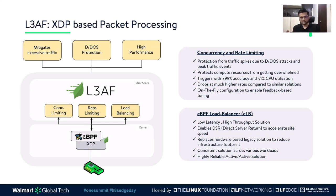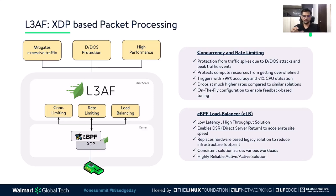The first XDP-based solution is connection and rate limiting. As enterprises increase their digital footprint, it is vital to have safeguards against sudden bursts of traffic or cyber attacks. Sudden bursts can cause back pressure at the edge, causing connections to pile up and overwhelm edge infrastructure. A connection limiting and rate limiting feature allows us to limit the concurrent number of TCP connections and the rate at which new TCP connections are established, protecting compute resources from being overwhelmed.